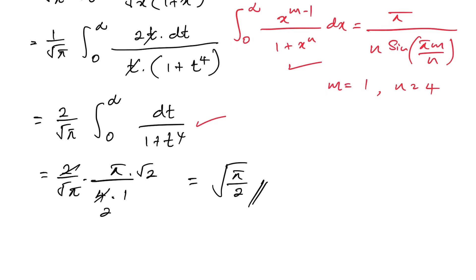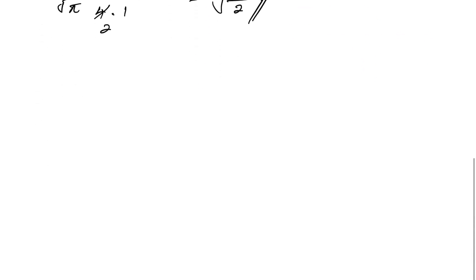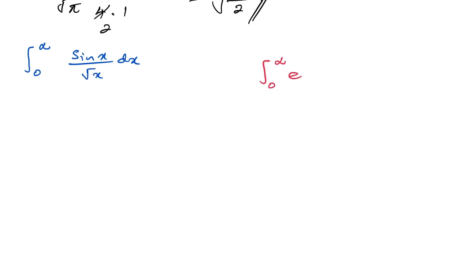For the second method, our integral is the integral from 0 to infinity of sin(x) over square root of x dx. In this method I'm going to define an auxiliary integral: the integral from 0 to infinity of e^(−xy) · y^(−1/2) dy. If we integrate this, we get square root of π over square root of x.